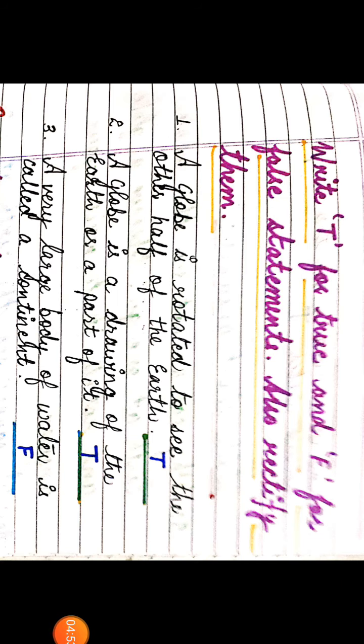Now let's proceed towards the true-false section. Write T for true and F for false statements, and also rectify them. The first part is: a globe is rotated to see the other half of the earth. This statement is true, so we will write T.